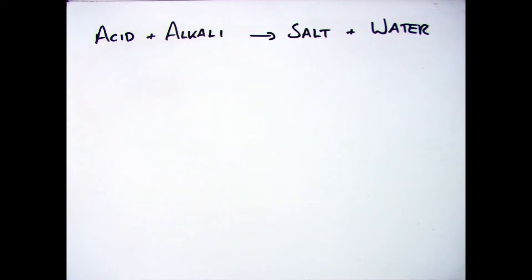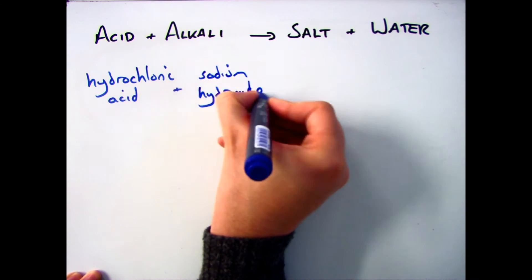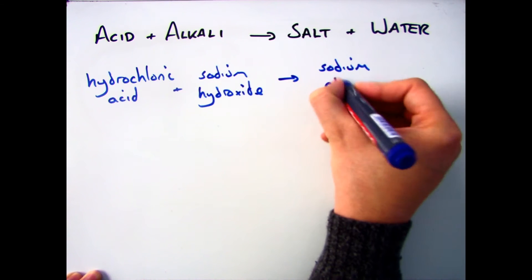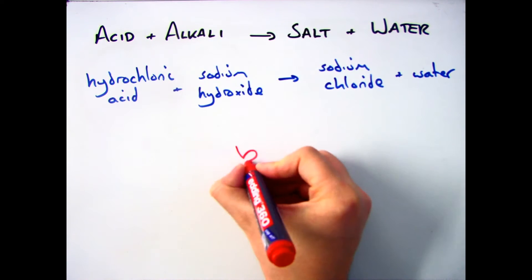The general equation for when an acid reacts with an alkali is acid plus alkali forms salt and water. For example, if I reacted hydrochloric acid with sodium hydroxide, I'd get sodium chloride and water. Sodium chloride is my salt and water is my by-product.